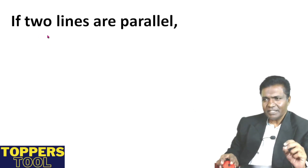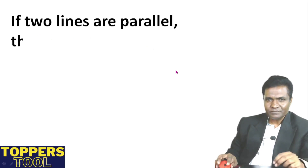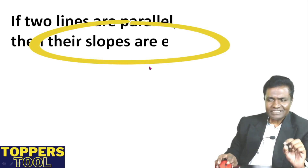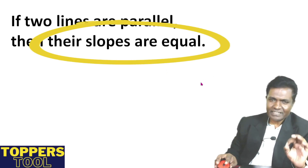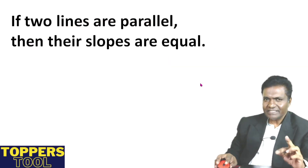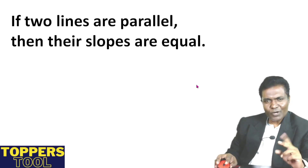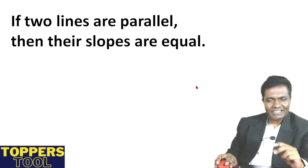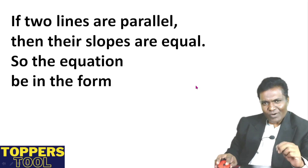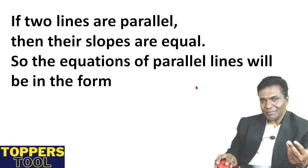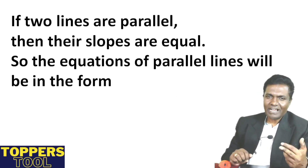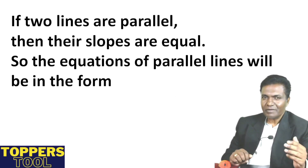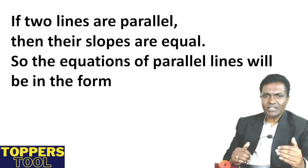If two lines are parallel, then their slopes are equal. That means the lines are parallel and the slopes are equal.